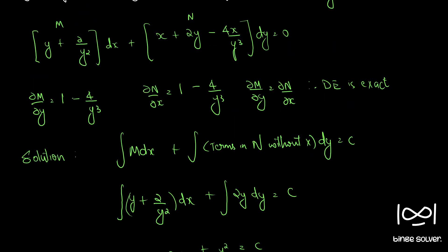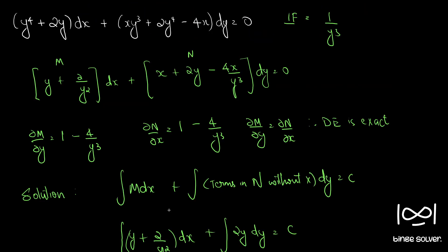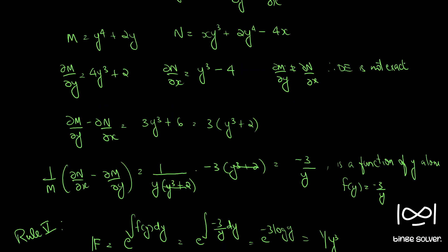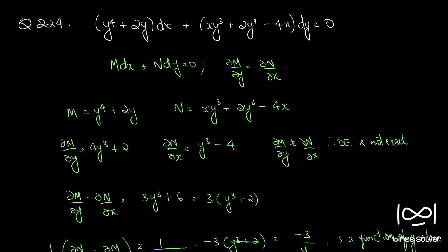These are the steps. We used Rule 5 to find the integrating factor. We got the integrating factor as 1 by y cubed. We multiplied throughout with the integrating factor and converted the differential equation into an exact equation, and solved using the solution for exact equations. This is the solution to question number 224.